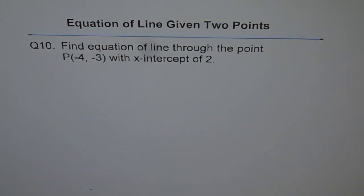Equation of line given two points. Question 10. Find equation of line through the point P(-4, -3) with x-intercept of 2. Well, x-intercept. So there is a variation this time. Let's look into the situation and try to sketch our line first and then we will write down the equation.